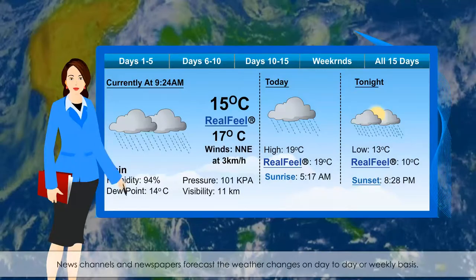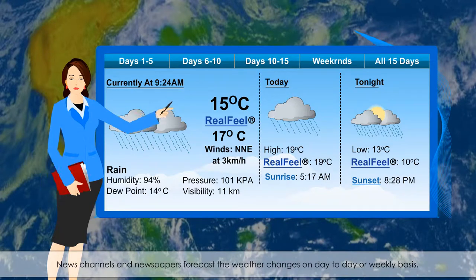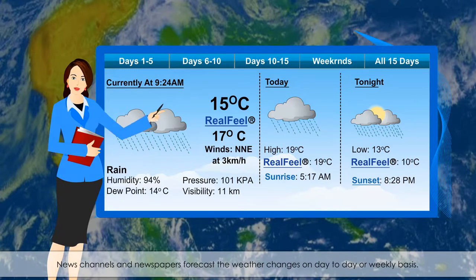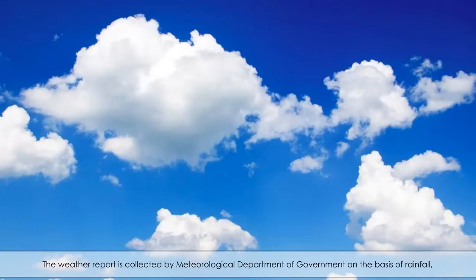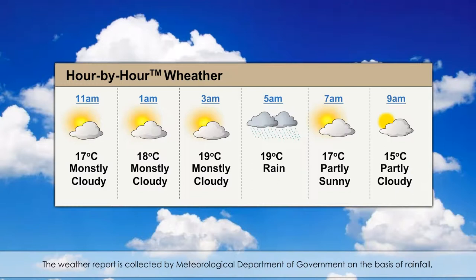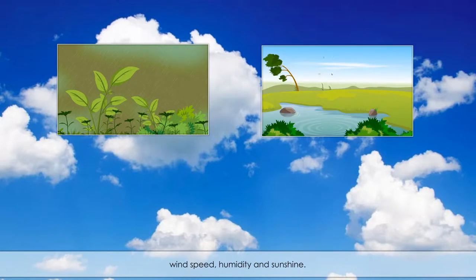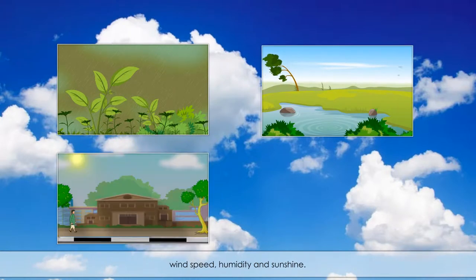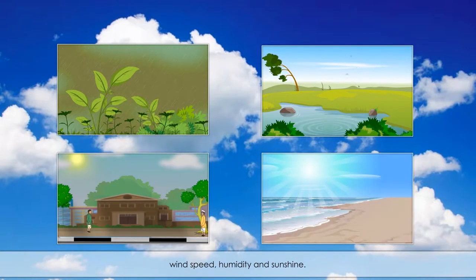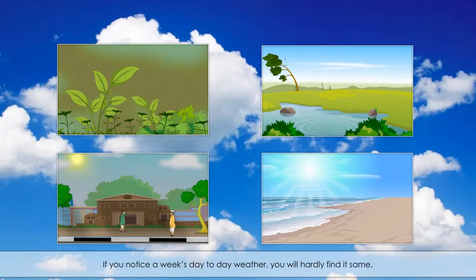News channels and newspapers forecast weather changes on a day-to-day or weekly basis. The weather report is collected by the Meteorological Department of Government on the basis of rainfall, wind speed, humidity and sunshine. If you notice a week's day-to-day weather, you will hardly find it the same.